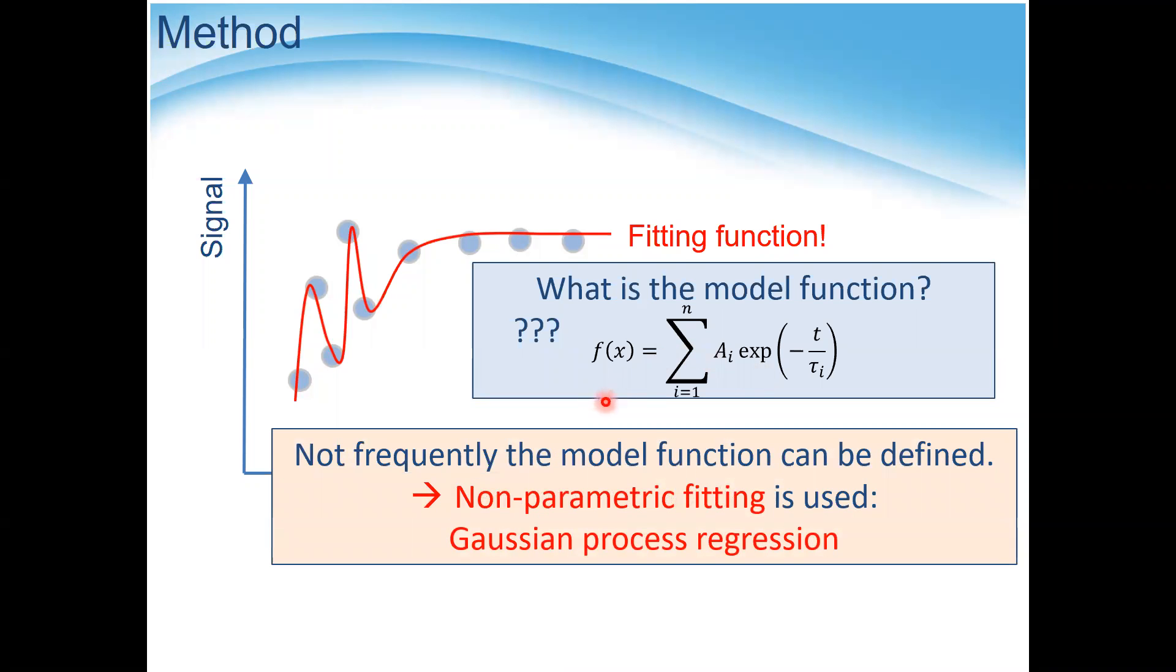However, in many analytical measurements such as vibrational oscillations, vibrational spectroscopy, and also X-ray absorption spectroscopy, the signal shape actually cannot be modeled well by some sort of mathematical function. In this case, we can use non-parametric fitting, which is recently frequently used in the informatics field. One of the most famous non-parametric fitting is Gaussian process regression, GP regression.